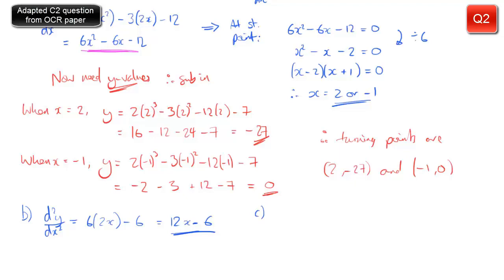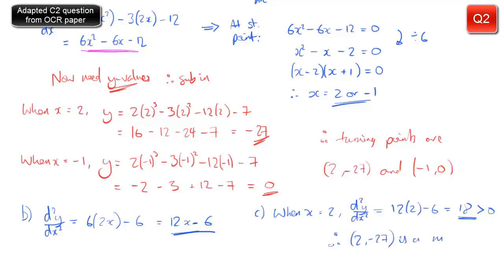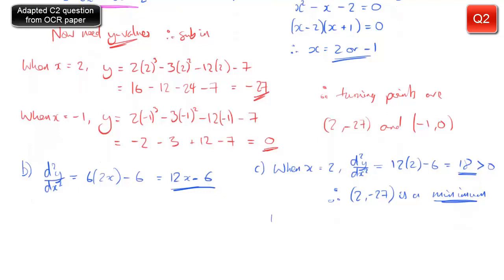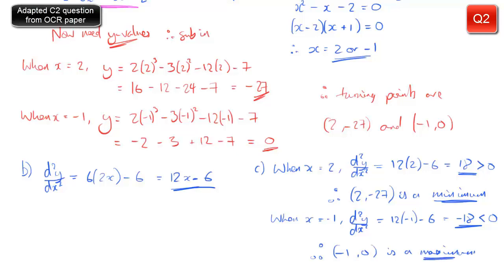For part c, we use the second derivative to determine the nature of our stationary points. At x equals 2: d²y/dx² equals 12 times 2 minus 6 which is 18. That's positive, and a positive second derivative means the point is a local minimum — so (2, minus 27) is a minimum. At x equals minus 1: d²y/dx² equals 12 times minus 1 minus 6 which is minus 18. That's negative, so (minus 1, 0) is a local maximum.